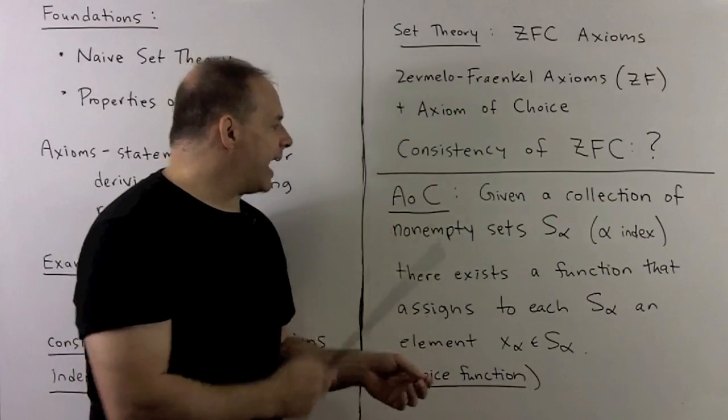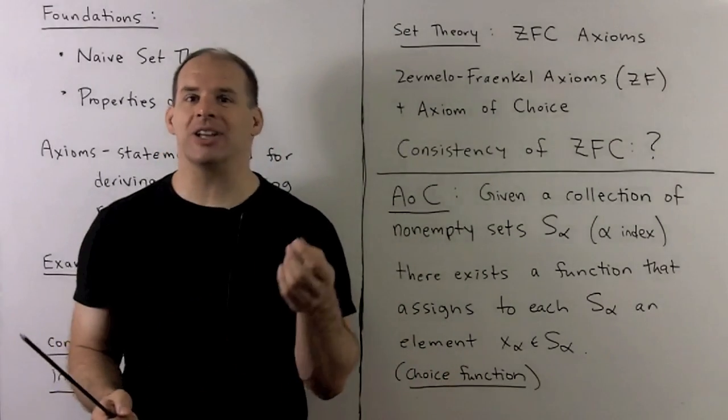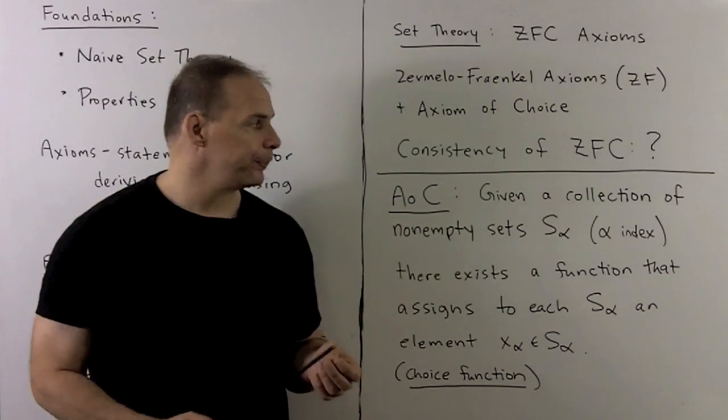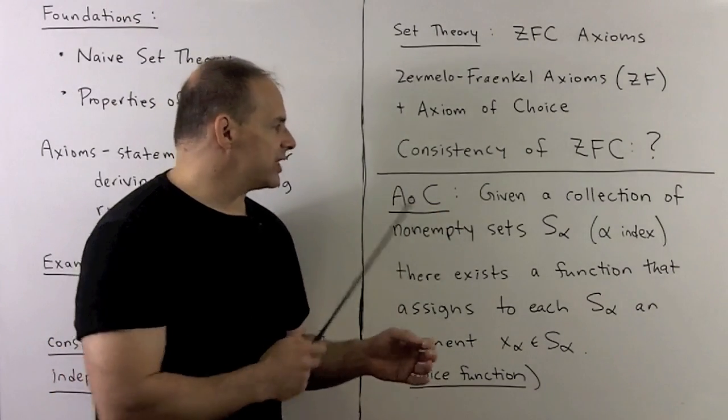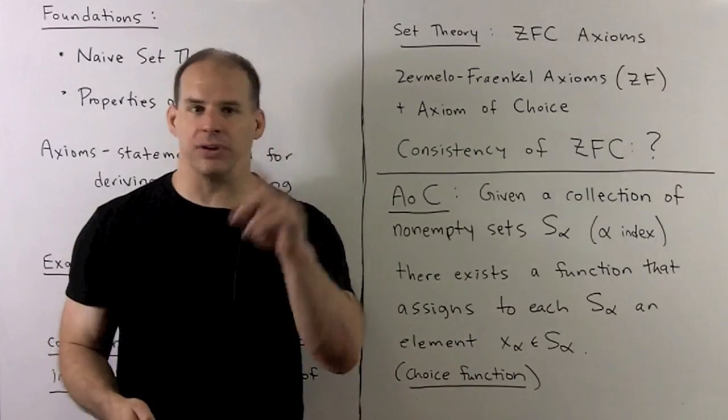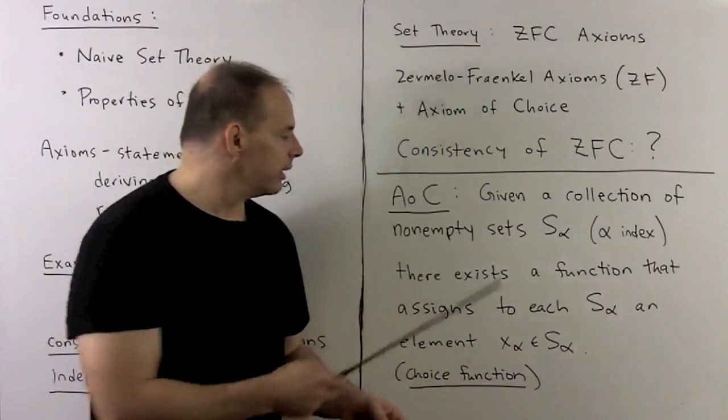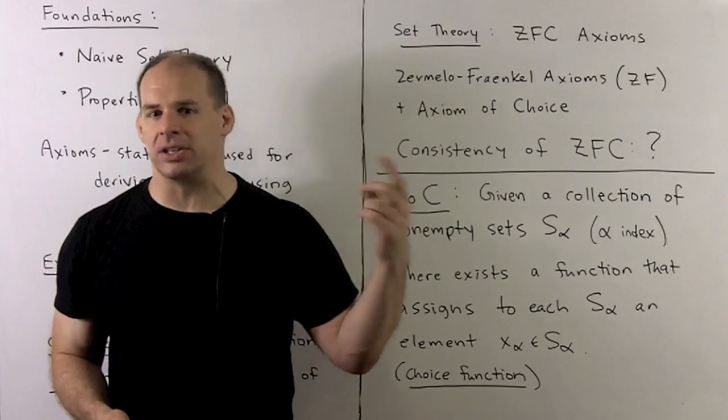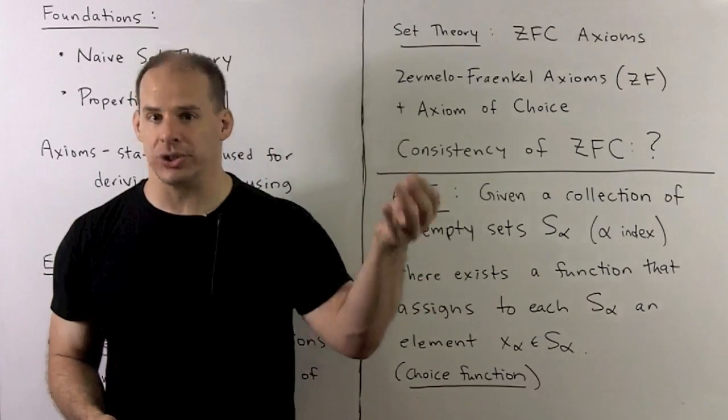Next, we have the axiom of choice. Traditionally, the axiom of choice has been a source of controversy, but not so much these days. Axiom of choice says: given a collection of non-empty sets S_α, where α is an arbitrary index, there exists a function that assigns to each S_α an element x_α in S_α. This we call a choice function.